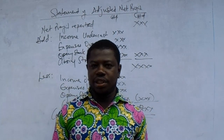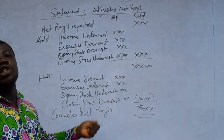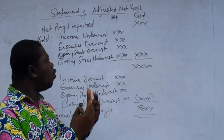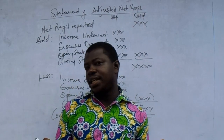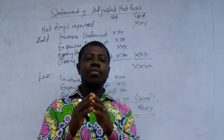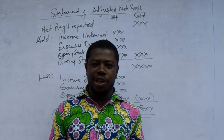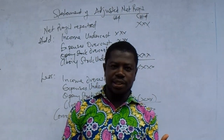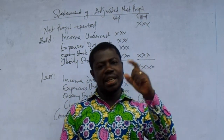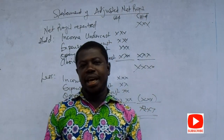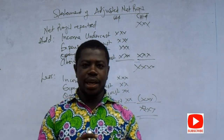Remember that all the errors we are talking about may either overstate or understate. Even if you didn't record it at all, it's an undercast. Don't be surprised that I'm using only overcast and undercast, because if there is an omission or error of principle and you didn't record it at all, it's an undercast. For example, if sales were omitted and not recorded at all, total sales has been reduced by that figure — that is an undercast. You can analyze every error to get an overstatement or understatement of the total figure for the expense or income item. When we solve a question, I will explain it better and everything will be clear.